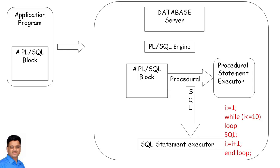Let us consider another code having a while loop to understand this architecture. In this case, we initialize a variable i and use a while loop to execute a SQL statement 10 times. The initialization of the control variable, the condition checking, and its increment are all performed by the procedural statement executor.